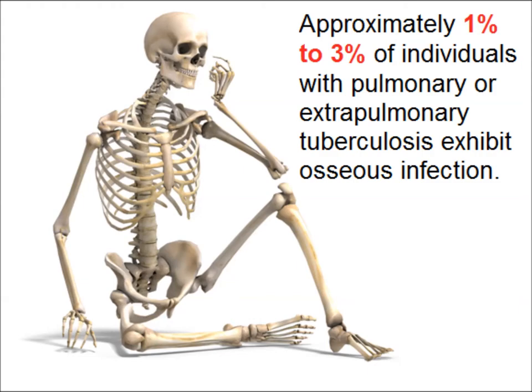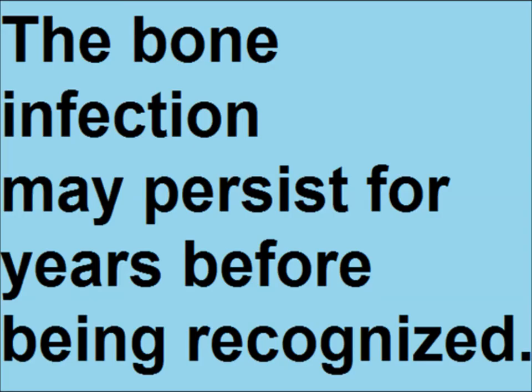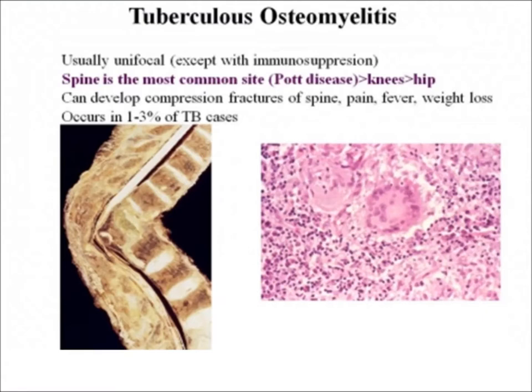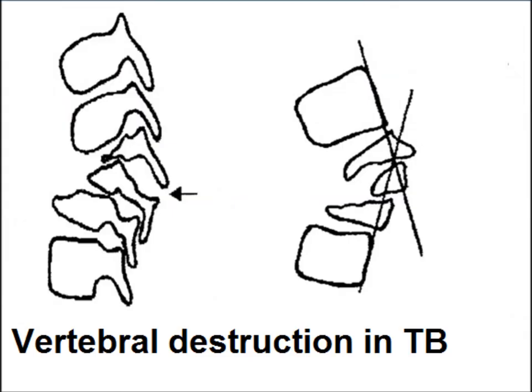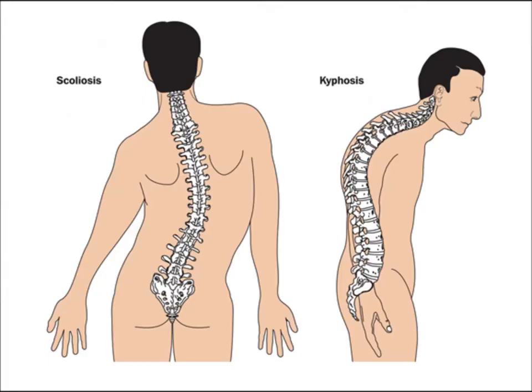The bone infection may persist for years before being recognized. Because there is granulomatous inflammation, it causes erosion of the vertebral bodies. The vertebral bodies collapse and may result in kyphosis or scoliosis. The most common site is the vertebrae; other sites may include hip and knee involvement. Destruction of vertebral bodies leads to collapse and deformities of the spine.